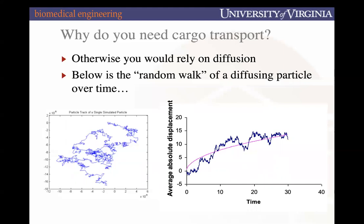We're going to use heart failure as our context to explore molecular motors today. Molecular motors are important because they help contribute to cargo transport throughout our cells. Why is cargo transport important? That's an active process, whereas if it were a passive process by diffusion, it could be modeled by a random walk simulation of a diffusing particle, where the ability of a particle to diffuse from one location to another looks like a random walk — nonlinear, traveling less over time.